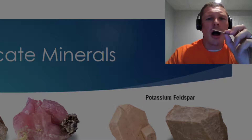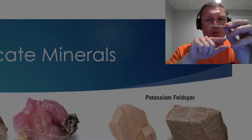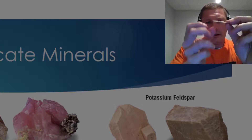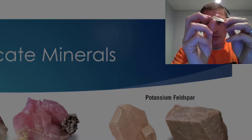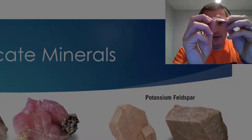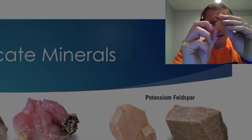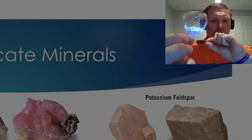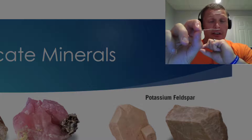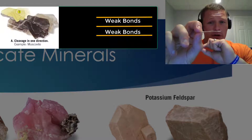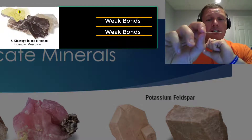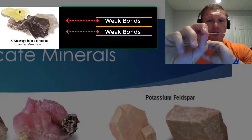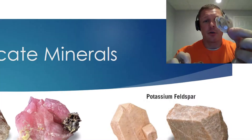I'm going to peel off one of the layers, because the weak bonds in this muscovite sample run horizontally. I'll grab onto this little corner and peel off what looks almost like a fish scale. This is a great example of cleavage in one direction — the weak bonds all lie parallel to one another, and I could peel off layer after layer of this muscovite sample.